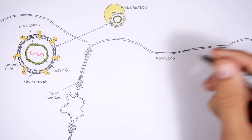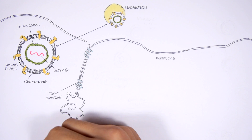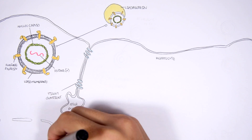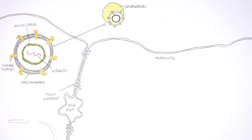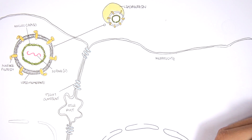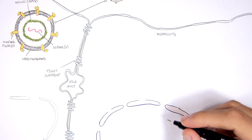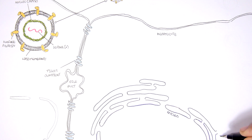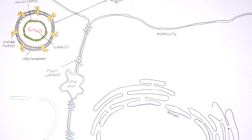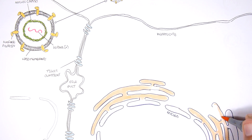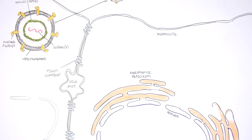In between the hepatocytes we have bile ducts where bile flows through. Bile leaves the liver and is stored in the gallbladder. Within the hepatocytes we have the nucleus, where the genetic material of the cell is kept. Surrounding the nucleus is the endoplasmic reticulum — in particular, the rough endoplasmic reticulum, which houses many ribosomes whose main function is to synthesize proteins from messenger RNA.